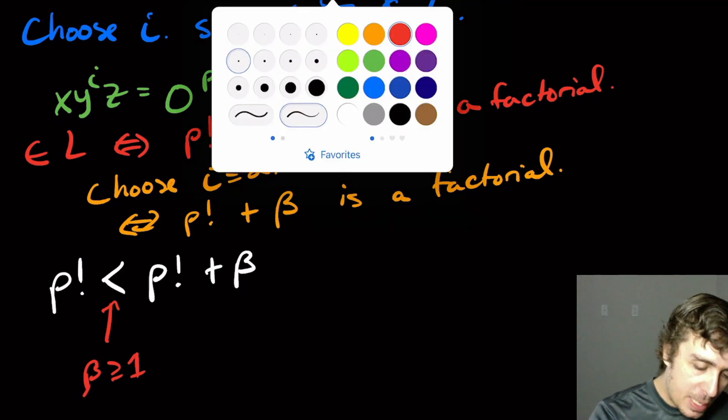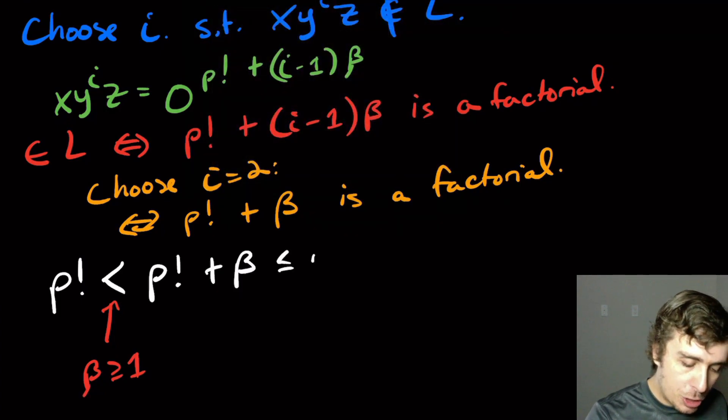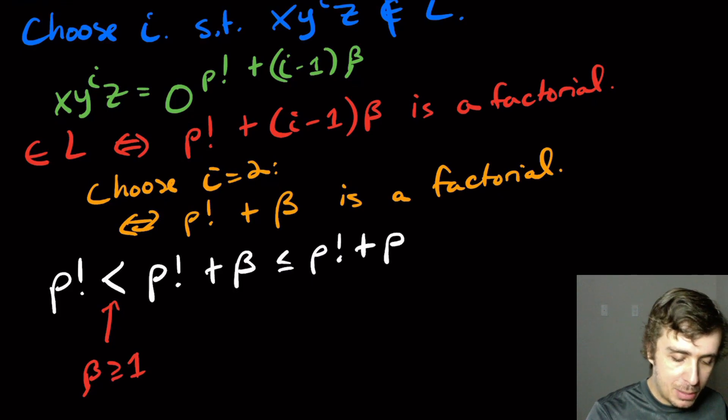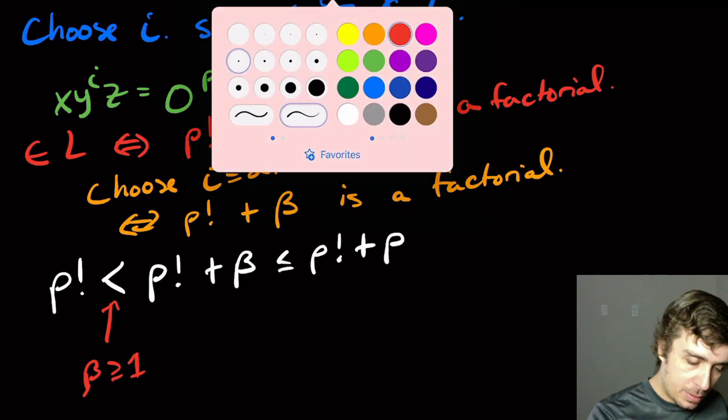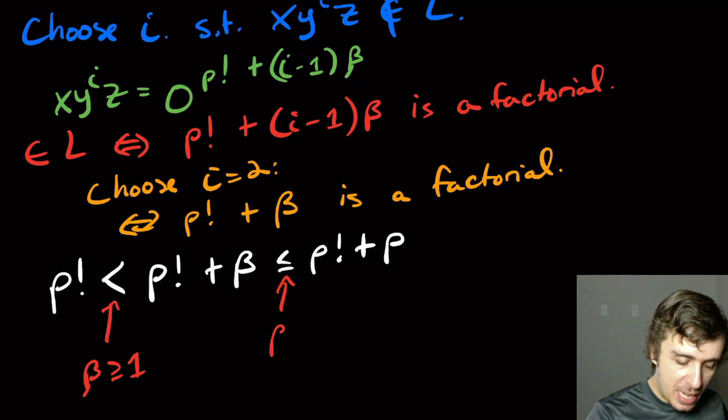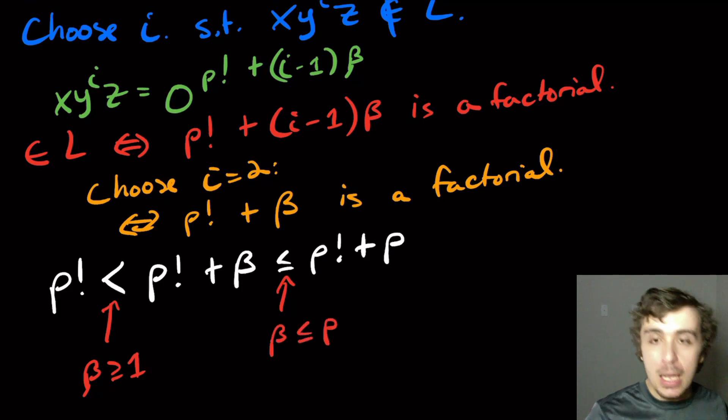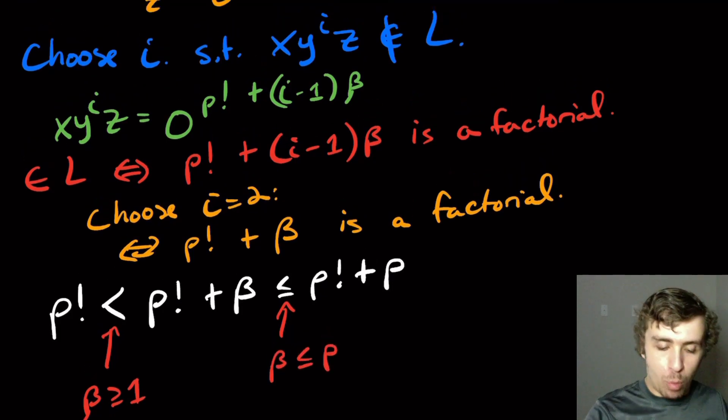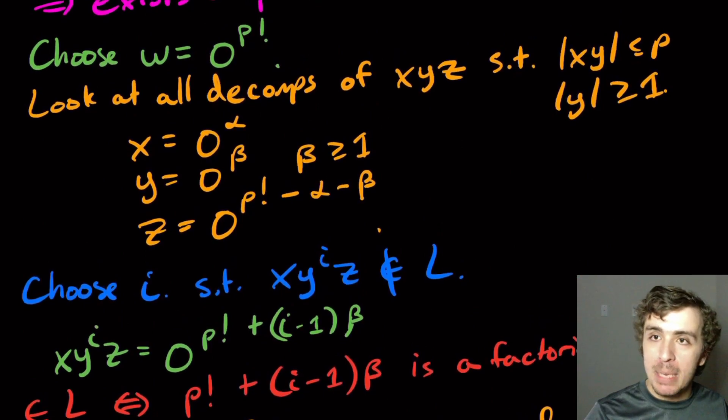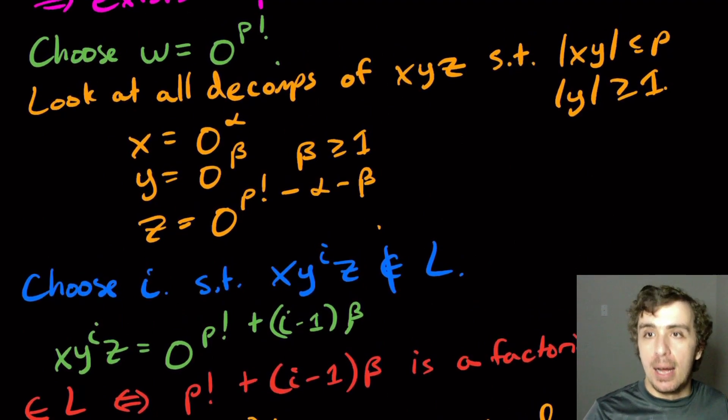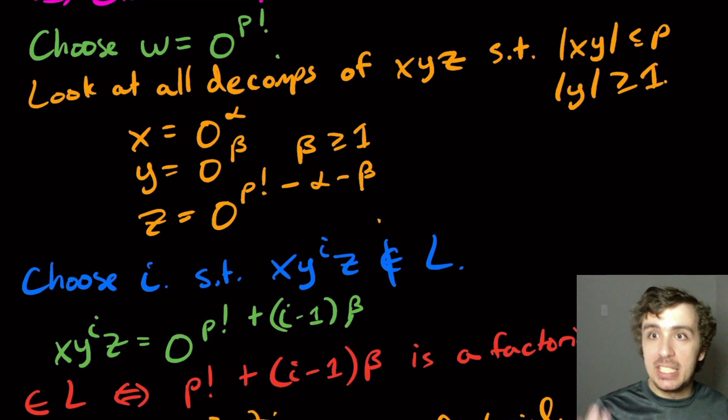It turns out to be at most P factorial plus P. And you may say, okay, where did that come from? Beta is at most P. Well, the condition of x, y's length being at most P, way up there on the right, that effectively says that the length of y is at most P because x can't subtract anything out of it, out of the length.